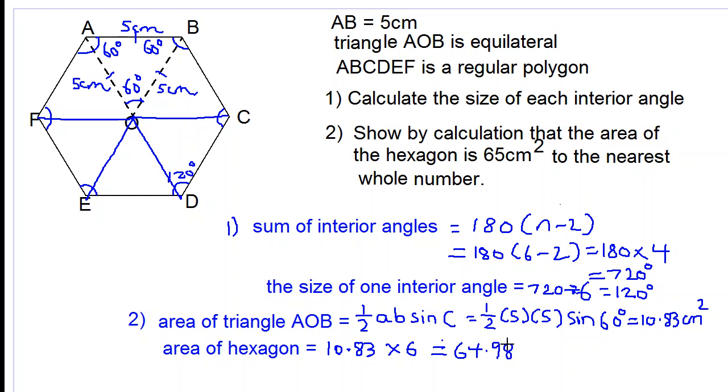64.98 cm². So let's round this off to the nearest whole number. The number next to 4 is 9, which is 5 or more, so we add 1 to the 4 and we get 65 cm² to the nearest whole number. These are our answers. Have a good day.